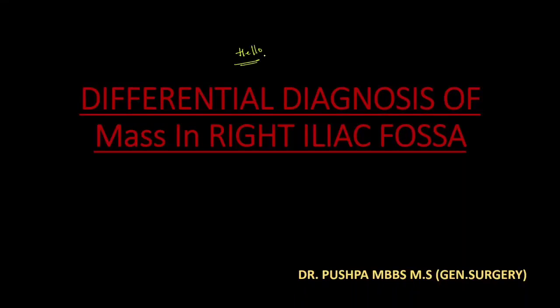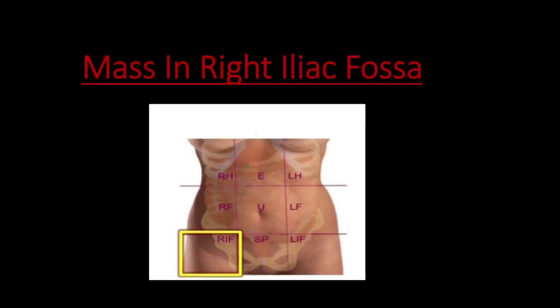Hello friends. In this session I will be discussing differential diagnosis of mass in the right iliac fossa. For examination purpose, the abdomen is divided into 9 regions and 4 quadrants. The 9 regions are: right hypochondriac, epigastrium, left hypochondriac, right lumbar, umbilical, left lumbar, right iliac fossa, suprapubic or hypogastrium, and left iliac fossa.